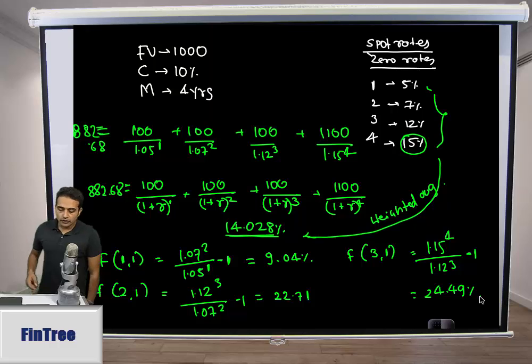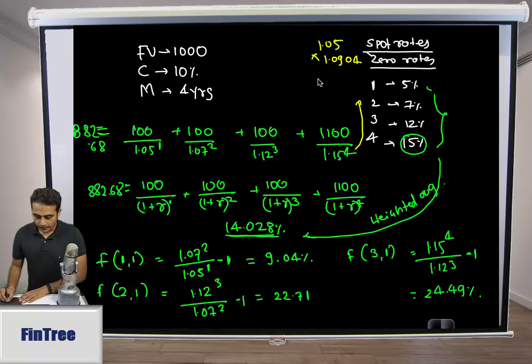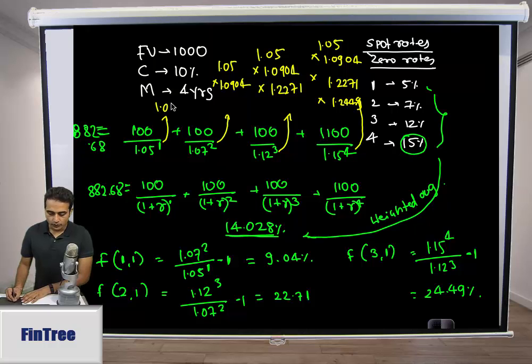Once we have the forward rates, instead of using 1.15 to the 4, we can substitute this number. We can say this number is the same as 1.05 × 1.0904 × 1.2271 × 1.2449. Cross check if they come out to be the same value. This number could be written as 1.05 × 1.0904, this number is 1.05 × 1.0904 × 1.2271, and this number is simply 1.05.